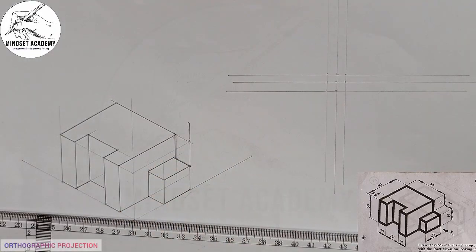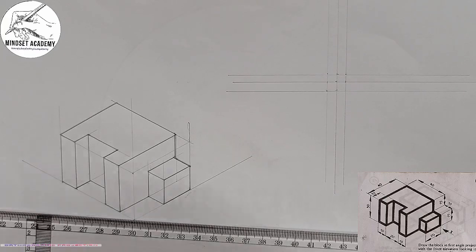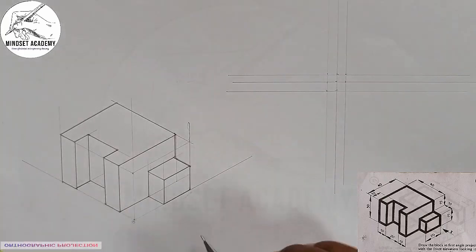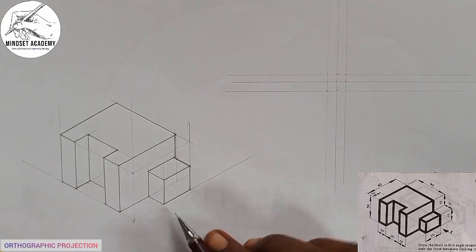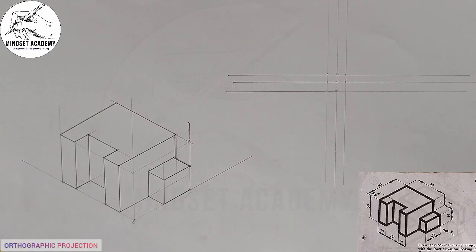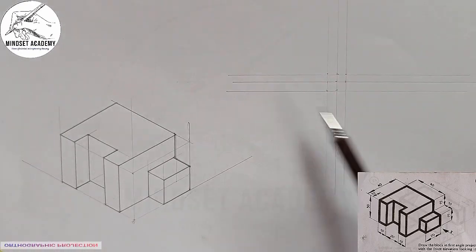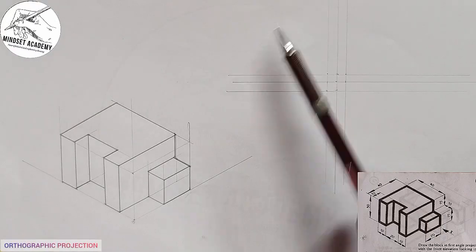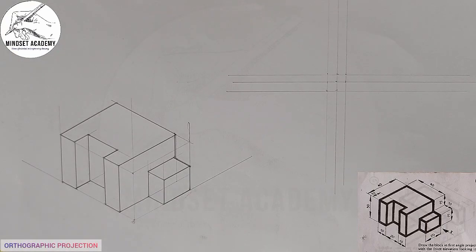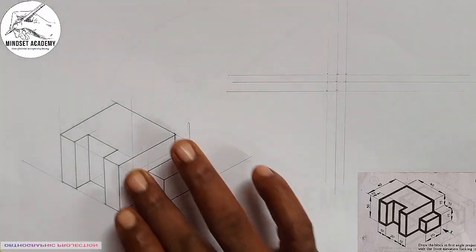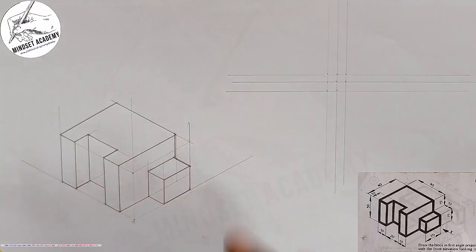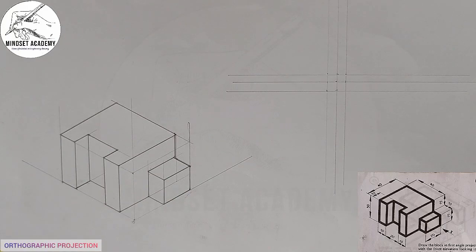Now, we are told to draw in first angle projection. Looking at this side — this will be our elevation. In first angle projection, the elevation should be at the first quadrant. There is the first quadrant, second quadrant, third quadrant, and fourth quadrant. So the elevation should be at this quadrant. The question you ask is: what will I see when I'm looking at this side of my block diagram?